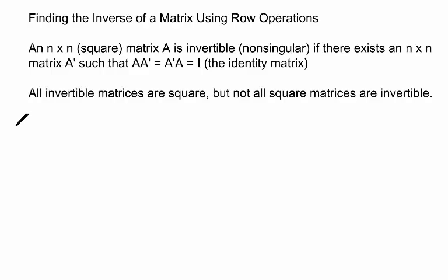Suppose we have matrix A, a 2 by 2 matrix with row 1 being 5 and 7, and entries for row 2 being 3 and 4. Let's use row operations to find the inverse. We'll begin by augmenting our matrix A with the identity matrix.